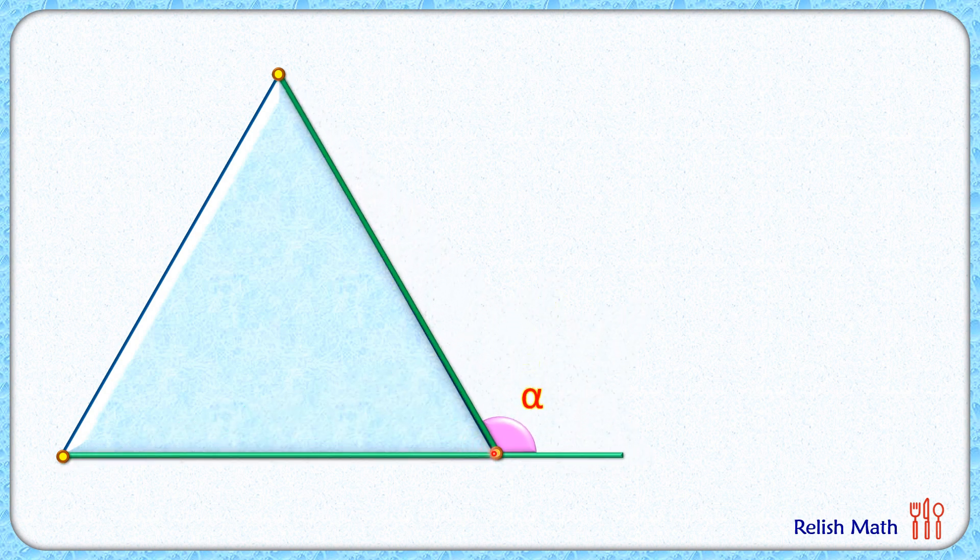Now this triangle has become a point triangle here, and we can easily find the value of angle alpha as this angle is 60 degrees here. So alpha is 180 minus 60, or alpha is 120 degrees, and that's our answer.